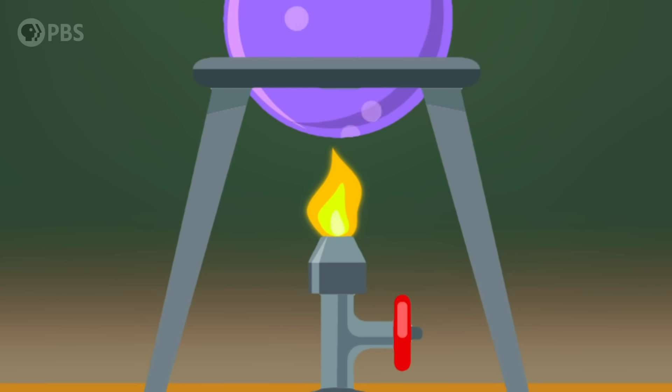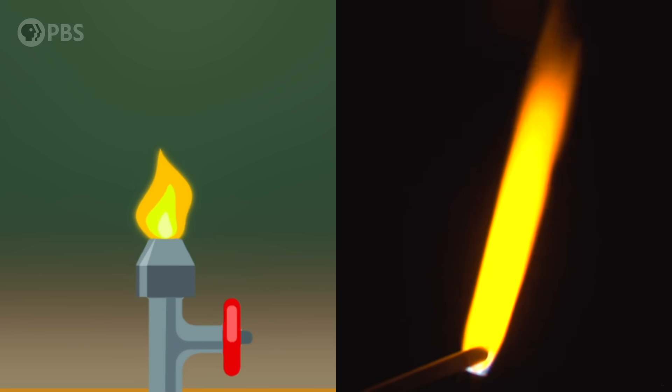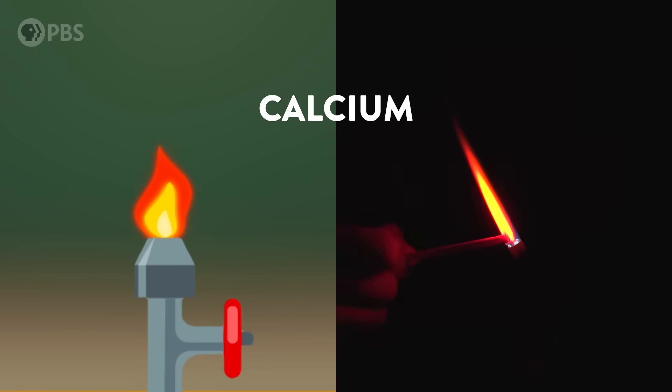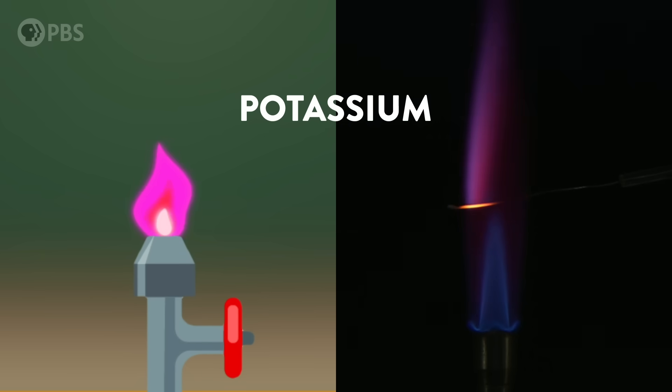Kirchhoff and Bunsen were fascinated by how different elements glow different colors when you put them in a flame. Like stick some table salt in there and you'll get a bright yellow flame. Try some calcium, now it's orange. Potassium is kind of pinkish.